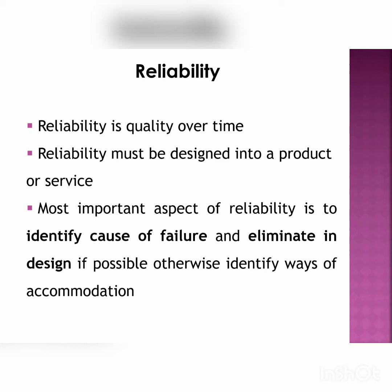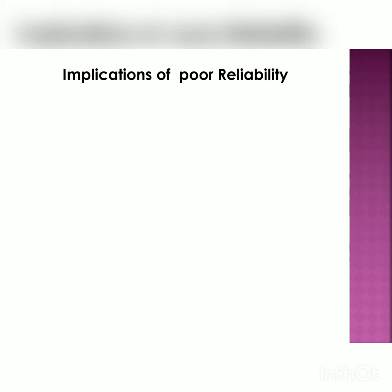The implications or consequences of poor reliability: the first is safety. If the product is not reliable, then hazards or accidents may happen. Second is competitiveness — if the product is not reliable, then competitors may develop their business in comparison with your product.